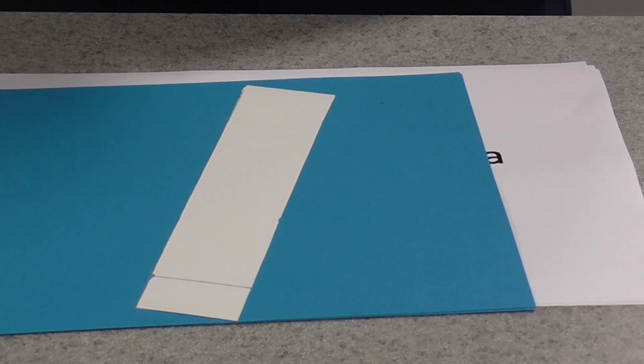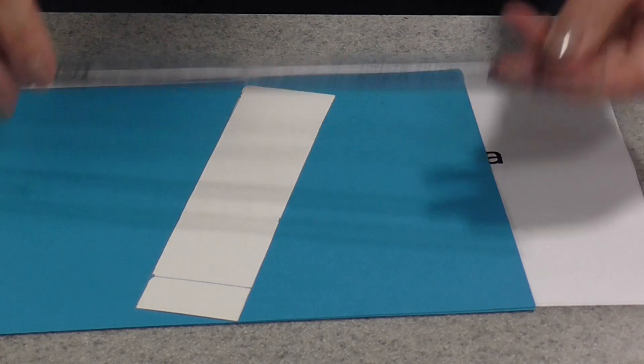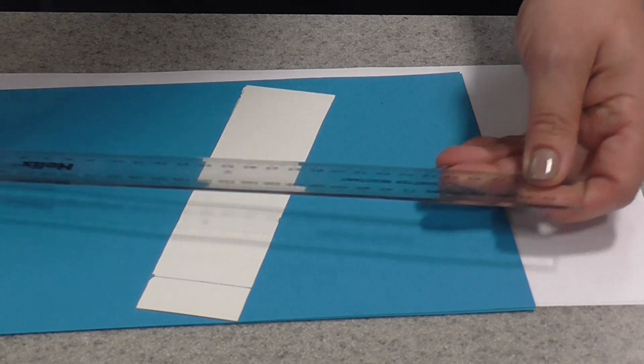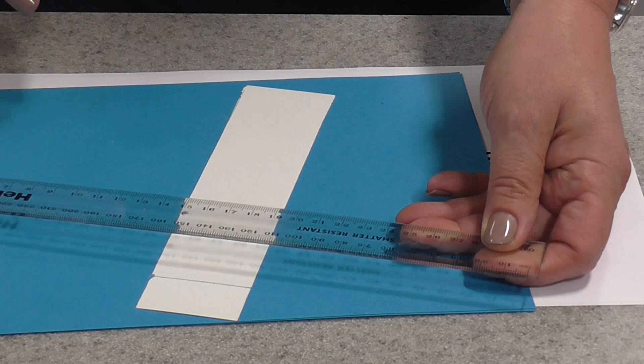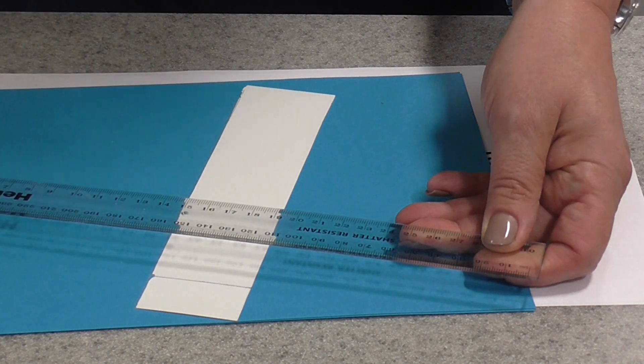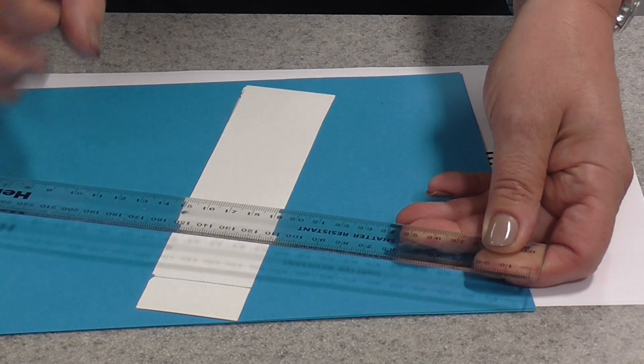When you've cut your strip, get your ruler and a pencil. It must be a pencil, not a pen. Draw yourself a line around 2 centimeters from the bottom of the strip. That will represent the origin.